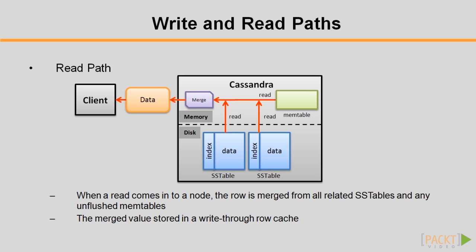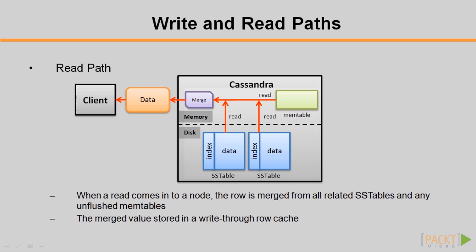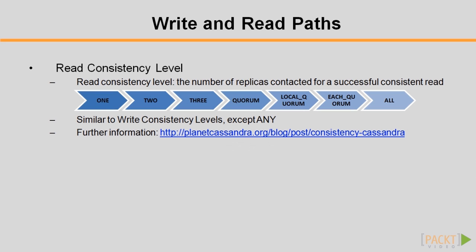Now we come to the read path. When a read request comes into a node, the data to be returned is merged from all related sstables and any unflushed memtables. Timestamps are used to determine which one is up to date. The merged value is also stored in a write-through row cache to improve future read performance. Read consistency level is the number of replicas contacted for a successful consistent read — almost identical to write consistency levels, except 'any' isn't an option here.